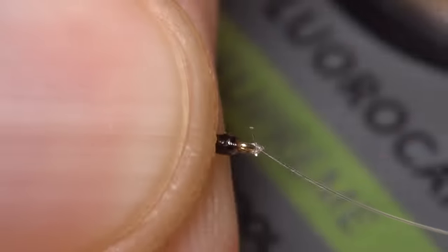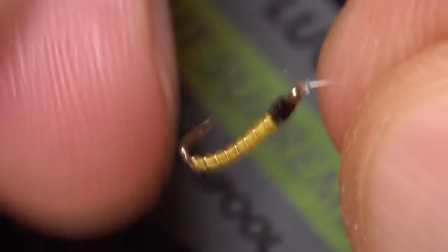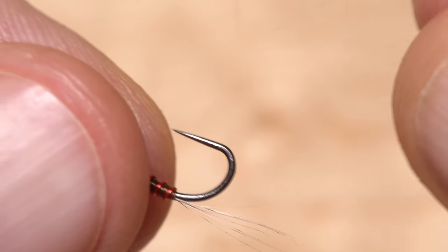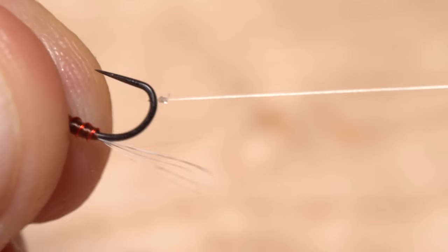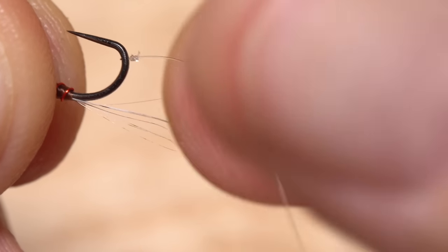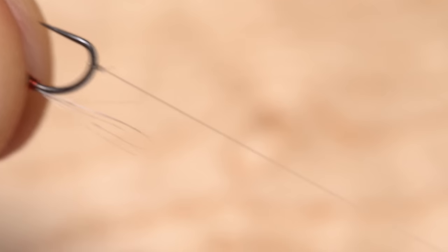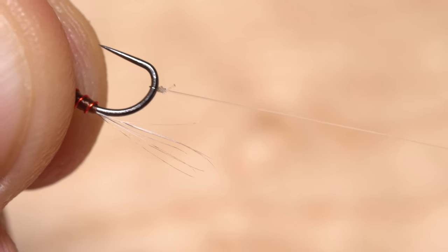I do prefer to leave just a little bit of tag in case of slippage. Something like a uni knot at the other end of that tippet segment works well for securing it to the bend of the lead fly. I've never had a problem with this slipping off, even when using barbless hooks.